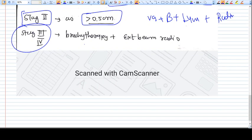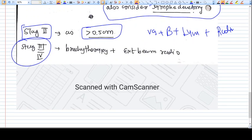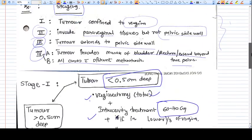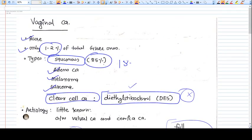In stage three and four, we consider it as late stage, so only chemoradiation is there - brachytherapy and external beam radiotherapy. This was, I think, at our level to understand what is vaginal cancer and how we should treat that cancer. Thank you, friends.